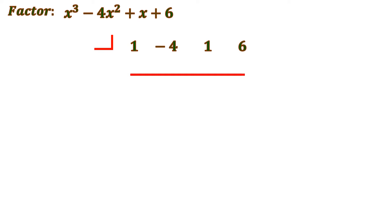To save time, I'll show you the number that fits: positive 2 gives a remainder of 0. Bring down 1; 1 times 2 is 2, and negative 4 plus 2 is negative 2. Then 2 times negative 2 is negative 4, and 1 plus negative 4 is negative 3. Negative 3 times 2 is negative 6, and 6 plus negative 6 is 0. So the remainder is exactly 0 when you use positive 2.